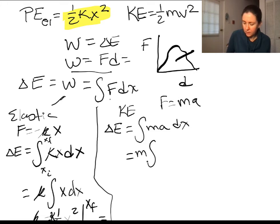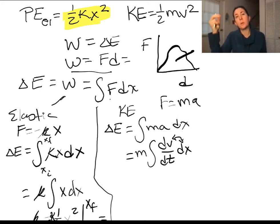I'm going to pull my mass out front. The acceleration is just the velocity, the change in velocity over the change in time, or dv/dt, and then this is going to be dx. We can rearrange this integration, just sort of flip-flopping the dx and the dv, because these two are multiplied by each other, so we can have dv first and then dx, or we can have dx first and then dv. We can integrate over position, or we can integrate over velocity.